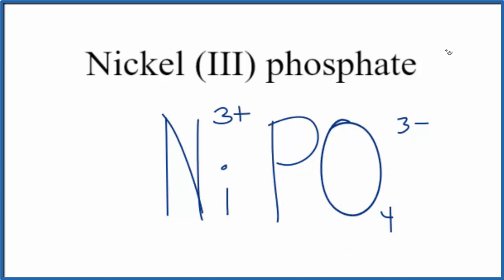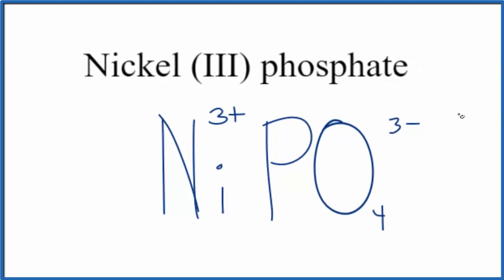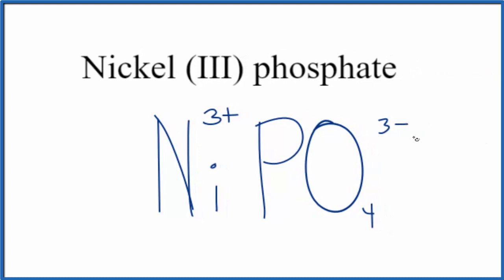Because this nickel(III) phosphate is neutral, it doesn't have 'ion' written after it, the charges need to add up to 0, have a net charge of 0. In this case, we have 3+ and 3-, that adds up to 0.